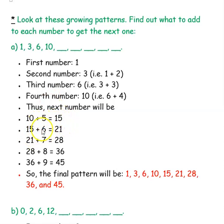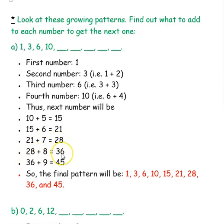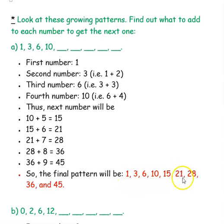Next, we add 1 more each time. So 5 plus 1 is 6, and 15 plus 6 is 21. Then we add 7: 21 plus 7 is 28. 28 plus 8 is 36. Then 36 plus 9 is 45. So the final pattern will be 1, 3, 6, 10, 15, 21, 28, 36, and 45, and it goes on like this.